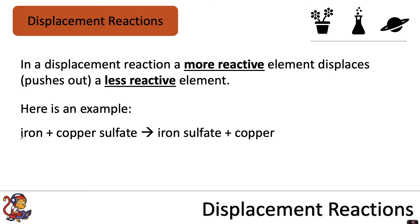So we say that the iron has displaced copper, and you can see it as it has swapped positions with the copper. So now the iron is bonded to the sulphate and the copper is on its own.